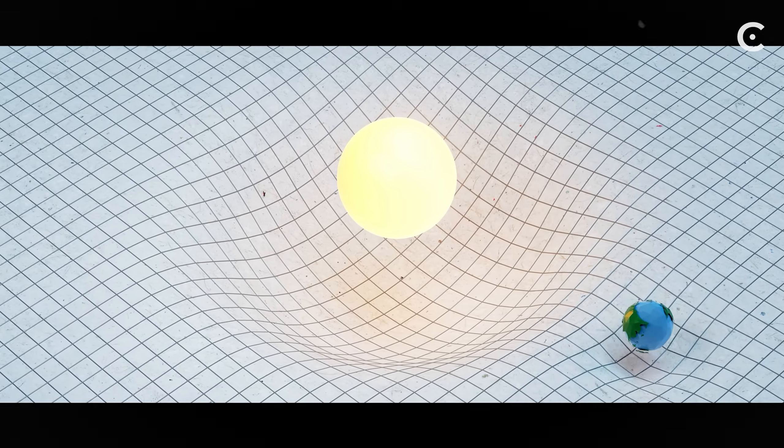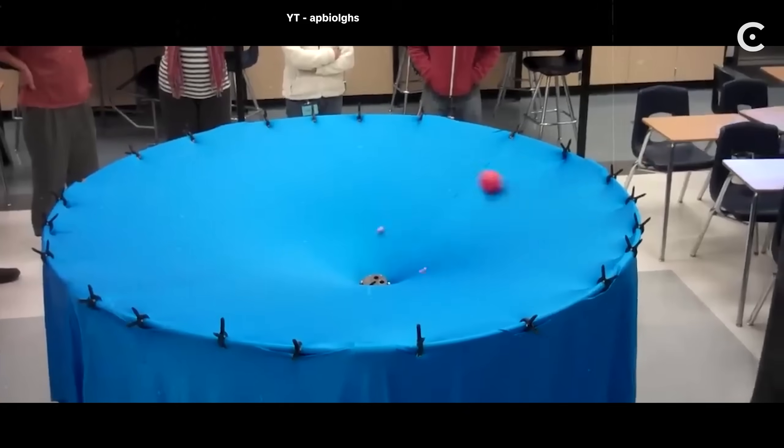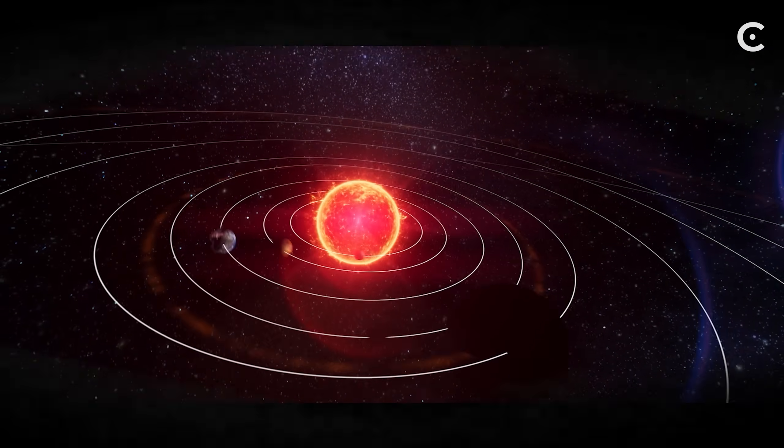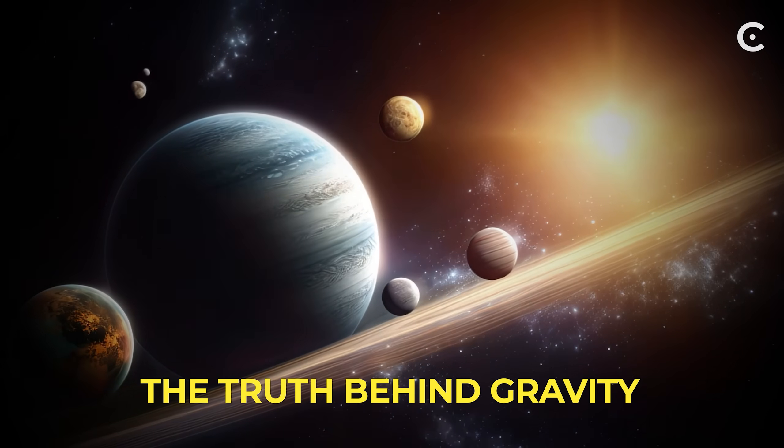Why does gravity bend space-time? We've all seen the bowling ball on a trampoline analogy for gravity — mass bends space-time, and that's why planets orbit the stars. But have you ever stopped to ask why? Why does something as seemingly empty as space and time respond to mass? Today we're going to go beyond the analogy to uncover the true reason gravity shapes our universe.